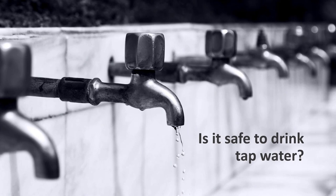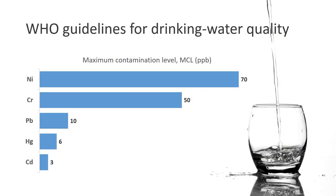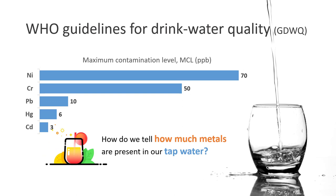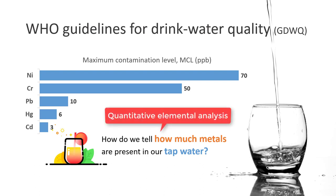Before diving into the topic, have you ever wondered if it is safe to drink tap water straight from the tap? How do we know if the tap water is safe for drinking? According to the World Health Organization guidelines for drinking water quality, if the amount of metals is higher than the maximum contamination level, it may have direct adverse health impact. The question becomes: how do we tell how much mineral or metals are present in our tap water? In other words, we are dealing with quantitative elemental analysis.